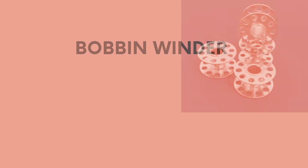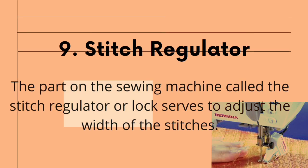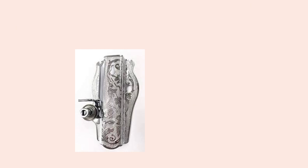Eighth, the bobbin-winder. The bobbin-winder is a small spool wheel that serves to fill the yarn into the bobbin. Ninth, the stitch regulator. The stitch regulator or lock serves to adjust the width of the stitches. Tenth, the face plate. The face plate is a part that serves as a cover plate on a sewing machine.